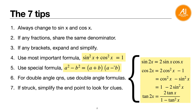Tip five: use the special formula a squared minus b squared equals (a plus b)(a minus b) — you use this quite often. Tip six: whenever the question has a double angle, use the double angle formula from your formula sheet, like sine 2x equals 2 sine x cosine x, or cosine 2x (three options to choose from), and tangent 2x equals 2 tangent x over 1 minus tangent squared x. Tip seven: when you're stuck halfway, look at the endpoint to find clues.